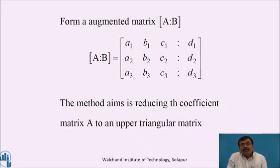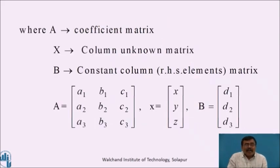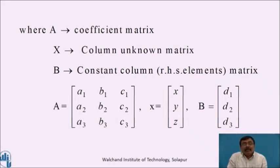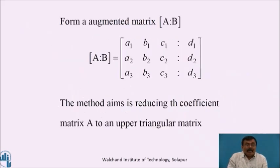Now form the augmented matrix. The meaning of augmented matrix: inserting or adding a column which consists of the elements of b to the coefficient matrix, a new matrix so obtained is called the augmented matrix, denoted by [A|b], which equals a1, b1, c1, d1; a2, b2, c2, d2; a3, b3, c3, d3.